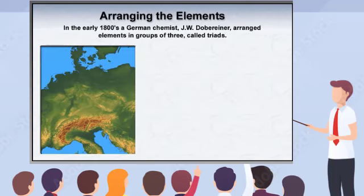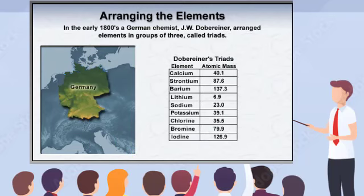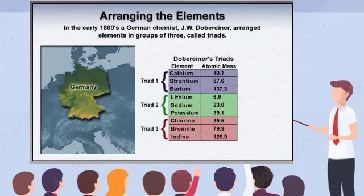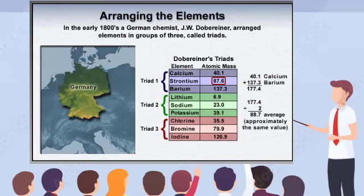In the early 1800s, a German chemist named J.W. Döbereiner produced one of the first arrangements of the elements. Döbereiner discovered that many of the elements known at the time could be arranged in groups of three, or triads, in which the middle element showed an atomic mass that was approximately the average of the other two. For example, calcium, strontium, and barium formed a triad, and the atomic mass for strontium was approximately the average of the weights of calcium and barium.